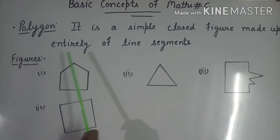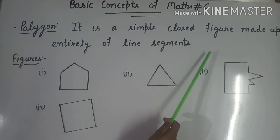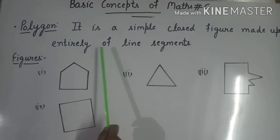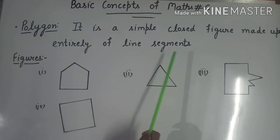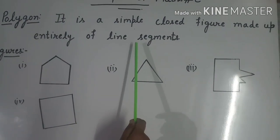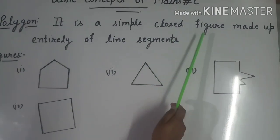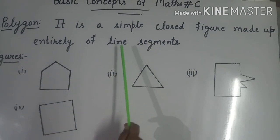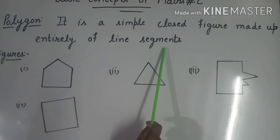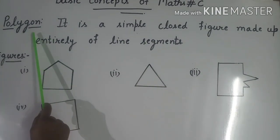Polygon is a simple closed figure made up entirely of line segments. Which means, if we have made a closed figure from line segments, then we will say polygon.